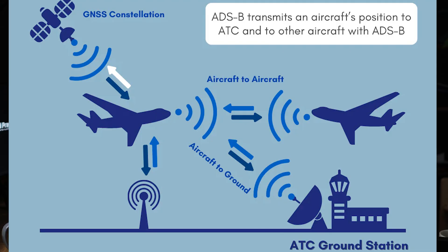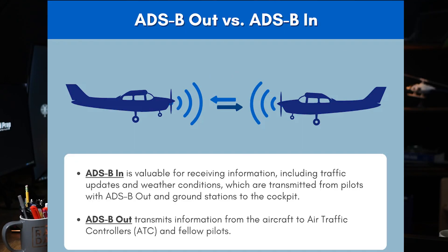ADS-B, or Automatic Dependent Surveillance Broadcast, is a modern technology used in aviation to enhance situational awareness and improve air traffic management. It works by broadcasting the aircraft's position, velocity, and other data to ATC and nearby aircraft.